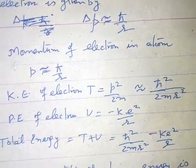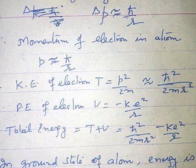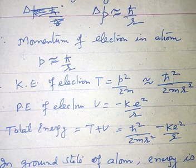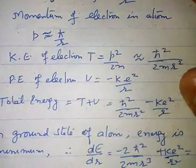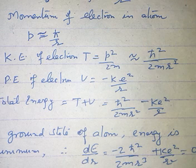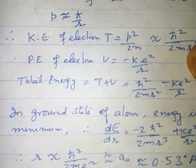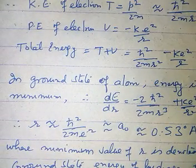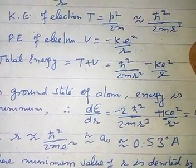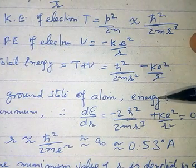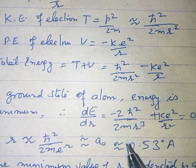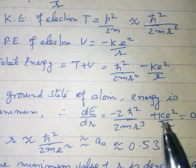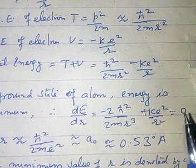Putting the value of p, and the potential energy of the electron is V equal to minus k e square upon r. So the total energy will be T plus V, which is h-cross square upon 2m r square minus k e square upon r. In the ground state of the atom, energy is minimum. Therefore, d E upon d r equals zero, which gives minus 2 h-cross square upon 2m r cubed plus k e square upon r square equals zero.